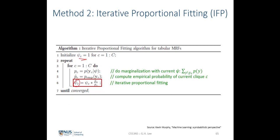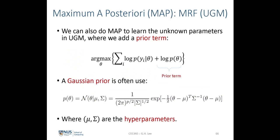We can also perform maximum a posteriori estimation to learn the unknown parameters in the undirected MRF by simply adding a prior term — using a Gaussian prior over the unknown parameters with hyperparameters mu and sigma — and performing the same partial differentiation over both the likelihood and prior terms.